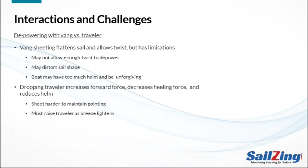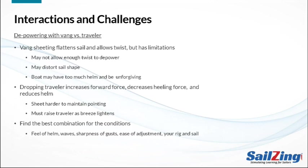Dropping the traveler to depower gives you more forward driving force, reduces heeling force, and reduces weather helm, making the boat more forgiving. The extra forward force gives you speed that makes up for the lower heading angle. However, if you drop the traveler, you're depowering the whole sail and you need to sheet harder to reduce twist and keep the top of the sail more powered up. You also need to pull the traveler back up as the breeze lightens. The best combination of vang and traveler depends on conditions — experiment based on the feel of the helm, the size of the waves, the sharpness of the gusts, and the ease of adjustment of the vang and traveler.